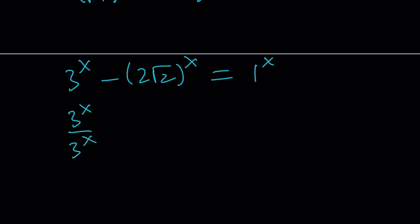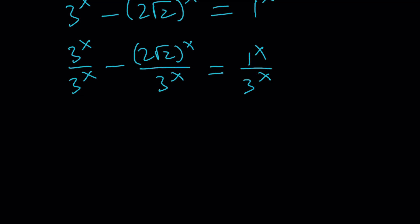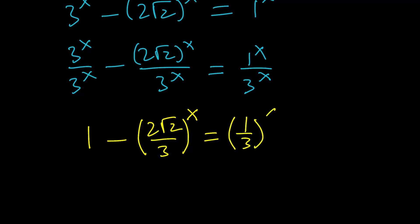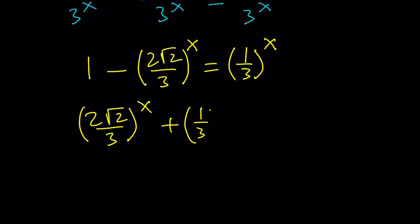Dividing each term by 3 to the power x: 3^x divided by itself is 1, and the second term can be written as (2 root 2 over 3) to the power x since the bases share the same exponent. The last term becomes 1 over 3 to the power x, because 1 to the power x is 1. Rearranging, we get (2 root 2 over 3) to the power x plus (1/3) to the power x equals 1.